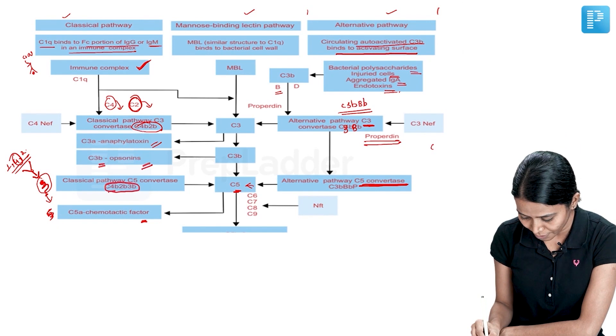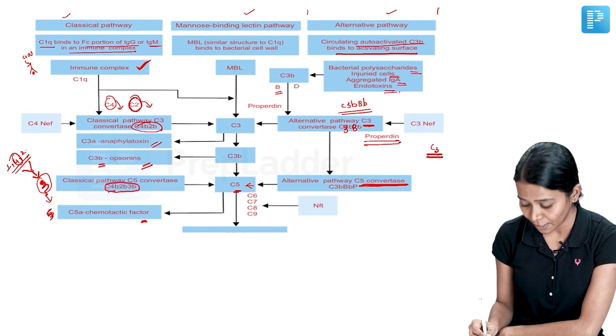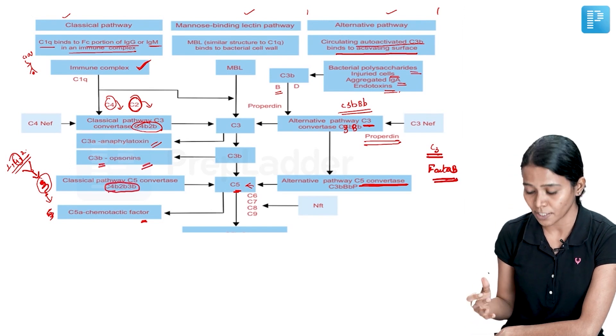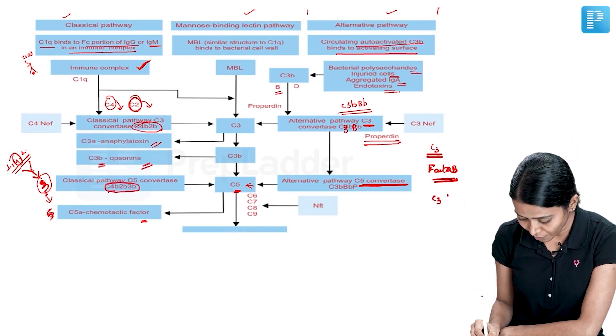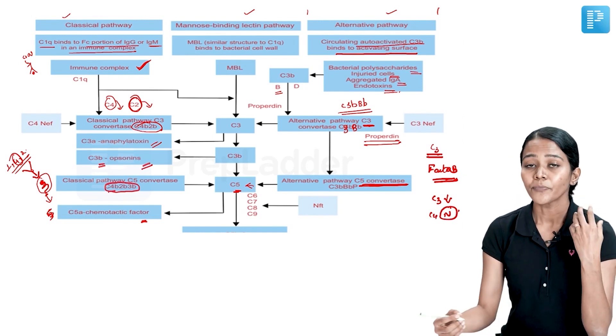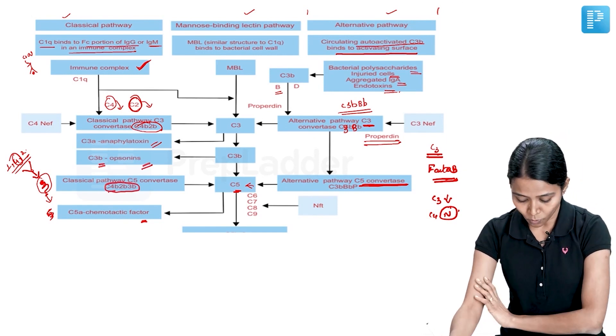So here if you see, it is only C3, factor C3, factor B which was important. So if in alternative pathway you are checking, only C3 levels are going to be reduced and C4 levels are going to be normal. So if this is the situation, that means the pathway is activated by alternative pathway.